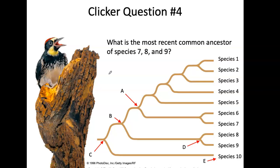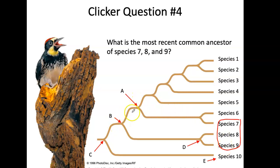Another clicker — pause it. What is the most recent common ancestor of species seven, eight, and nine? Going to seven, eight, and nine: the most recent common ancestor that includes all three — both eight and nine plus seven — would be B.